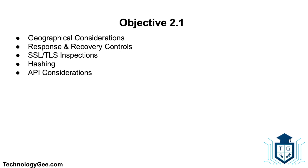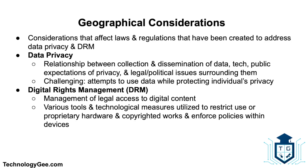Let's talk about geographical considerations. These are considerations that affect the laws and regulations that have been created to address data privacy and digital rights management. The first type is data privacy, which is the relationship between the collection and dissemination of data, technology, the public expectation of privacy, and the legal and political issues that surround them. Data privacy can be challenging since it attempts to use data while protecting an individual's privacy preferences and personally identifiable information.